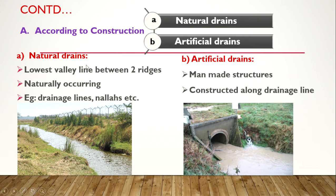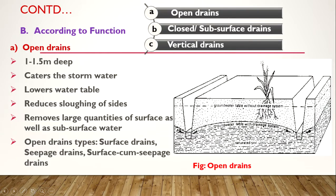According to construction, natural drains are naturally occurring — they are not man-made. A natural drain is the lowest valley line between two ridges, along which water can flow. Examples are drainage lines, nalas, etc. Artificial drains are man-made structures used for drainage.